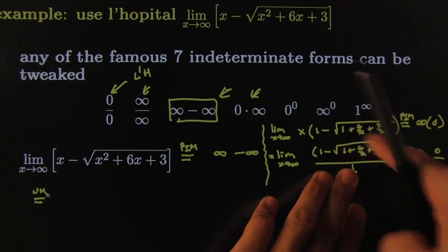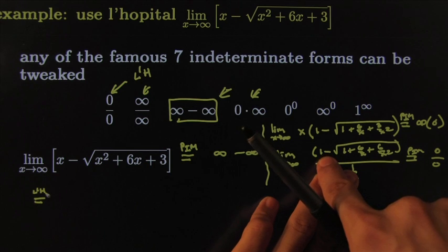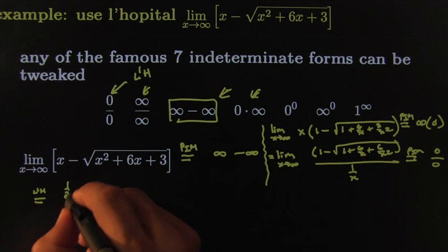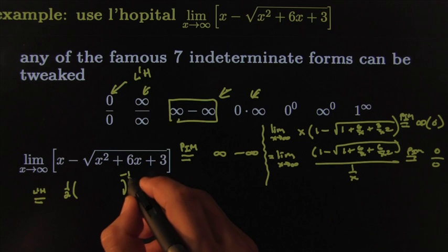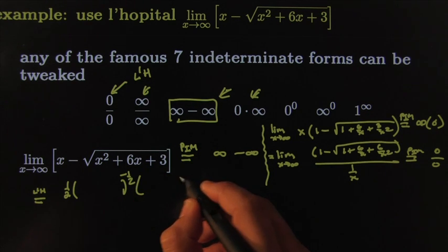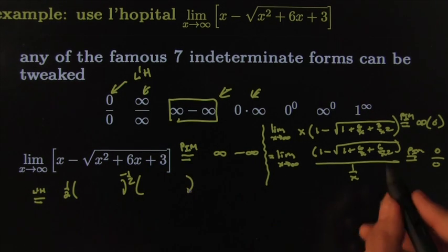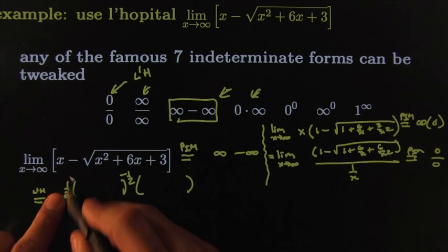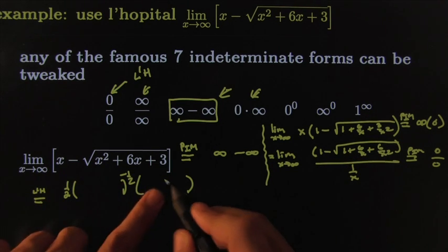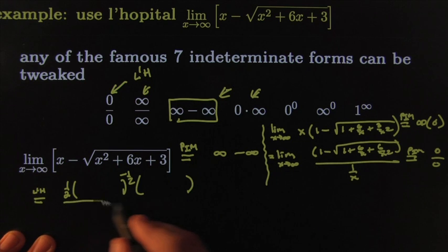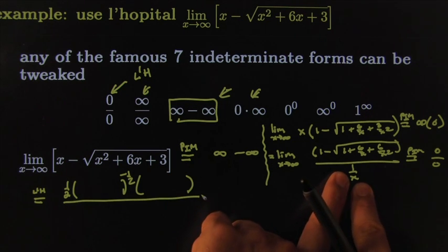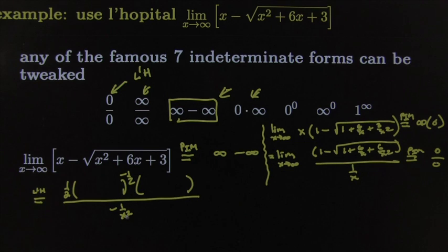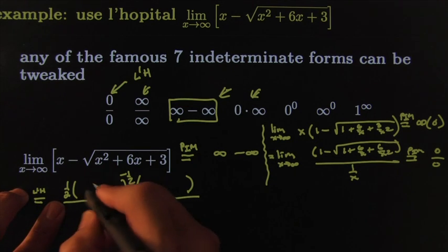The derivative of the top: the derivative of 1 is zero, and I just need the derivative of the square root term, which is one-half times that expression to the negative one-half times the derivative of the stuff inside — that's how you take the derivative of any square root: (1/2)(stuff)^(−1/2) times stuff prime. The derivative of the bottom, 1/x, is −1/x².